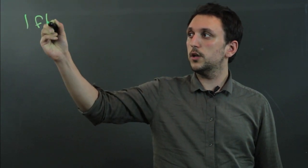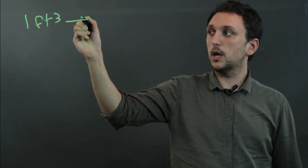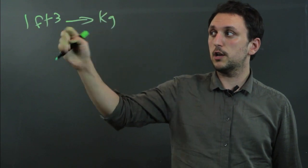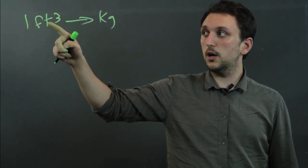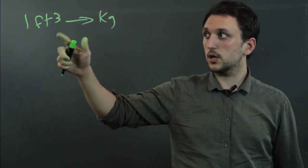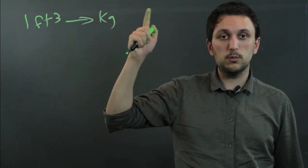So, if we say one foot cubed, and we want to convert to kilograms, we have to change both the system from American to metric, and we have to change volume to mass.